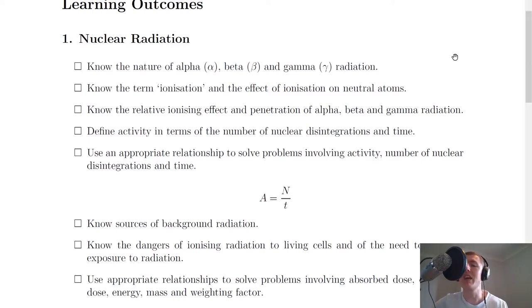Remember radioactive decay occurs from unstable atoms which want to become more stable and they do so by emitting an alpha particle, beta particle or gamma ray. Next, know the term ionization and the effect of ionization on neutral atoms. Ionization is the addition or removal of an electron from a neutral atom and this creates an ion, either positive or negative depending on whether the electron has been added or removed. The effect of ionization on neutral atoms is that it will form positive or negative ions.